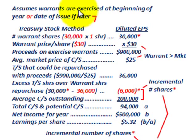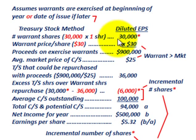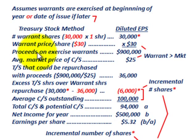Using the treasury stock method, you assume that the warrants are exercised at the beginning of the year, or at the date of issue if it's later. We start with our warrant shares — we had 30,000 warrants for one share of common stock each, equating to 30,000 shares of common stock. The warrant price per share is $30, so $30 times 30,000 shares equals $900,000 — that's the proceeds we'd receive if all those warrants were exercised.